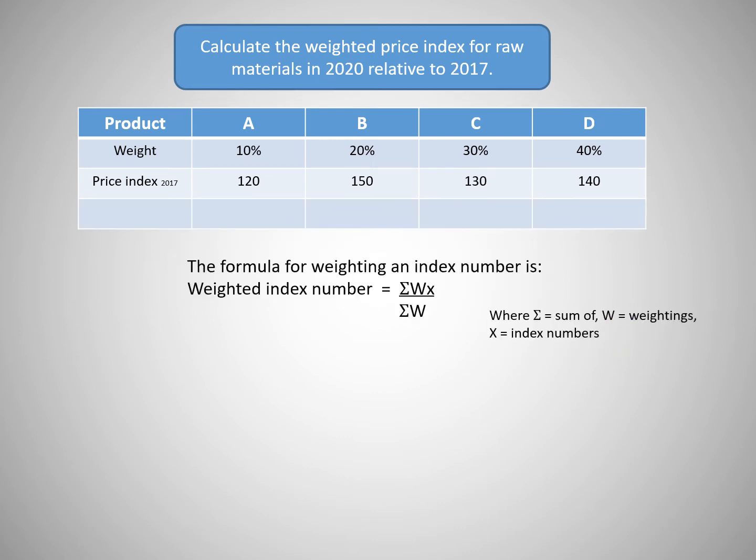Firstly, we weight each individual product. We do this by multiplying the weight for each product by the index number. So for product A, we have 10 times 120 equals 1200. B, 20 times 150 equals 3000.